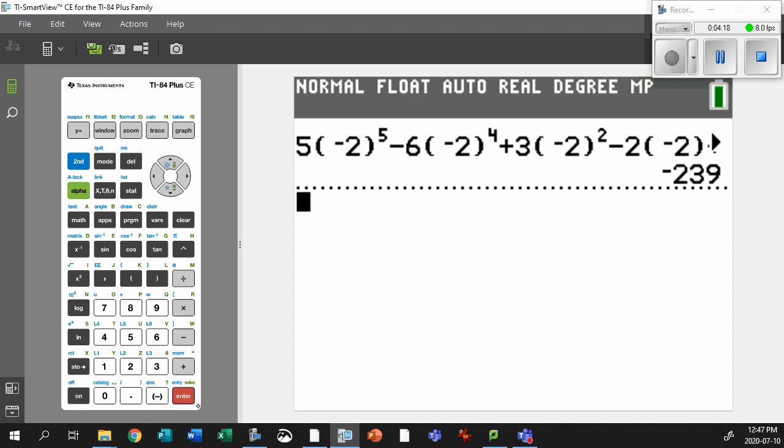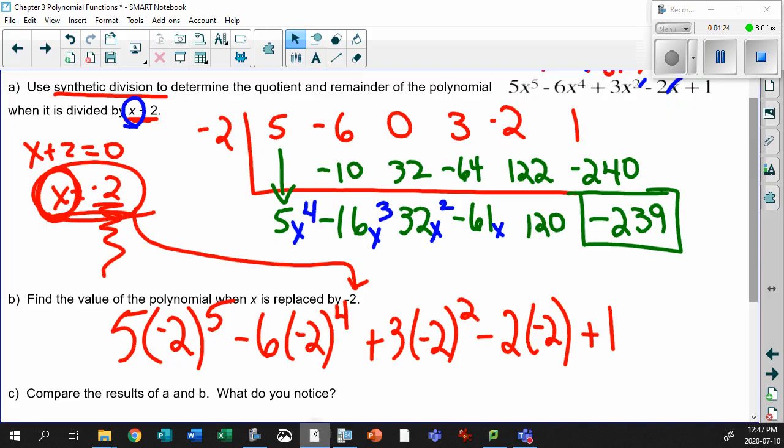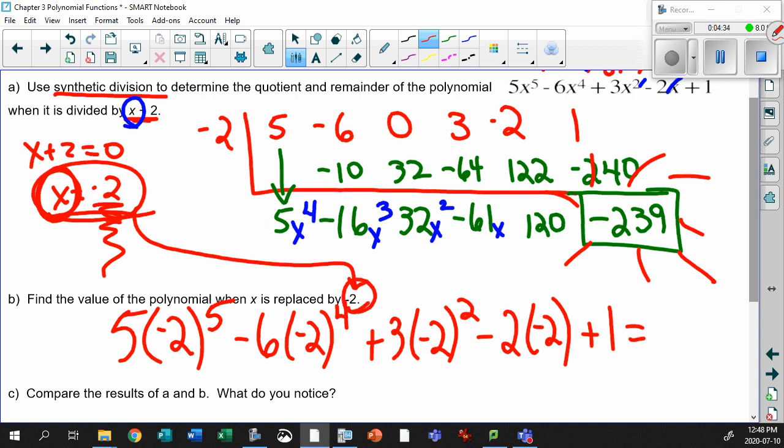Wait a second, minus 239? I've seen that somewhere before. Holy smokes, look at that, that's my remainder. What? This guy, when you substituted this value in, that's the divisor, the thing that you divided by. When you substituted into the original question, it pops out the remainder for you.